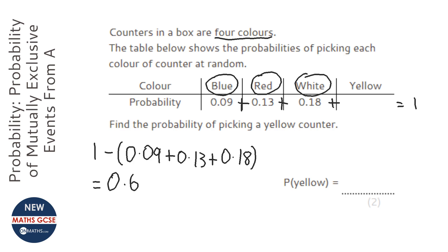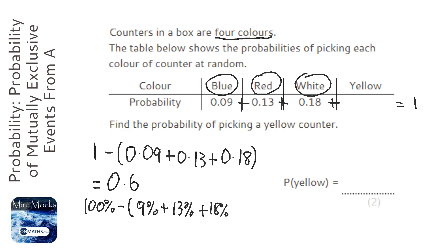Now if you don't have a calculator, it might be easier just to make these all percentages. So 100% take away 9% plus 13% plus 18%, and that will give you 60%, which is 0.6 as a decimal. So my answer is 0.6.